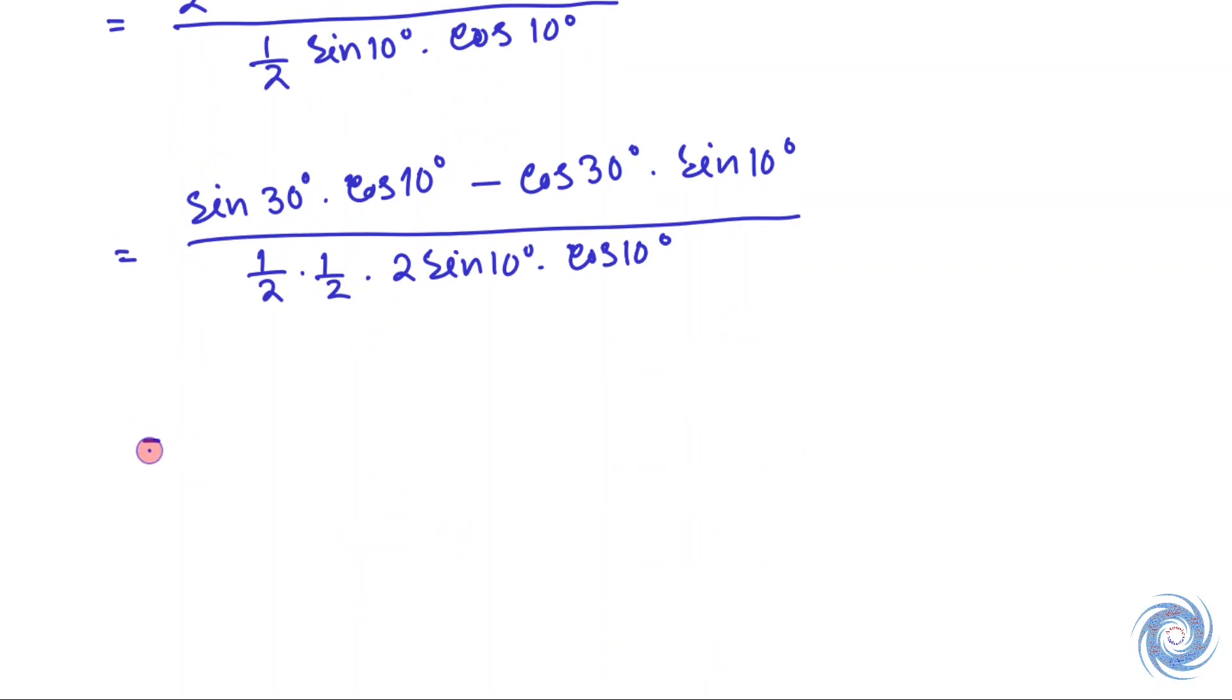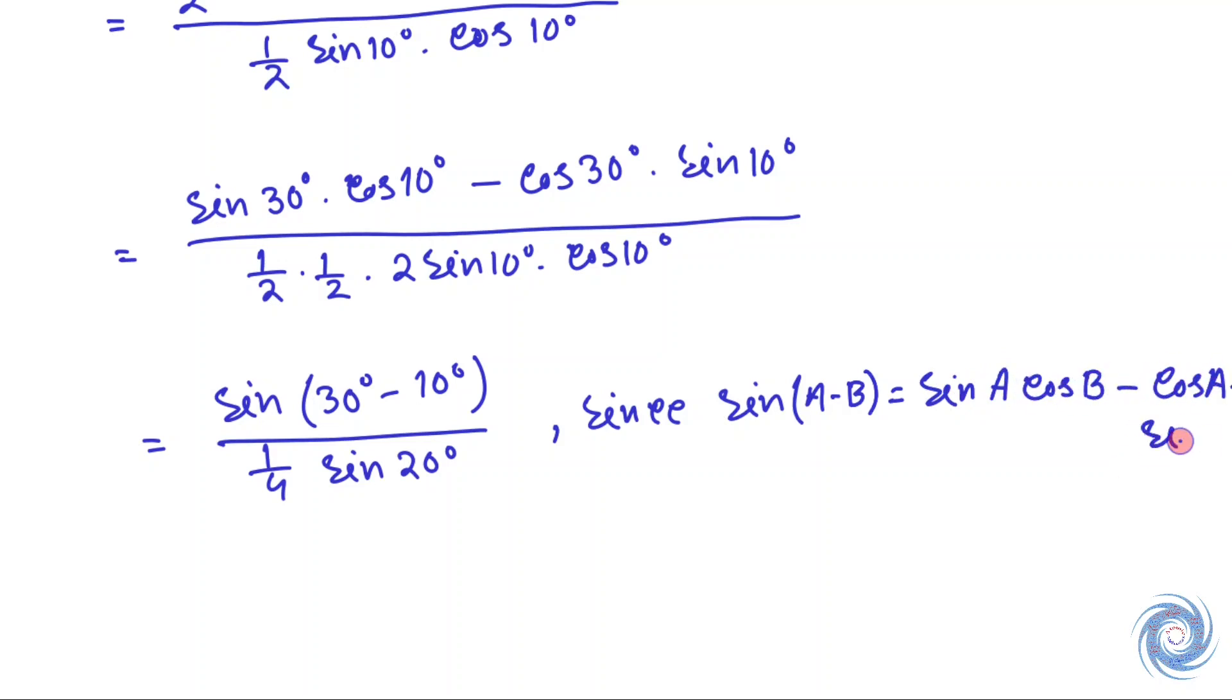And from here, we have used the following properties. That is, sine A minus B is equal to sine A cos B minus cos A sine B and sine 2 theta equals 2 sine theta cos theta.